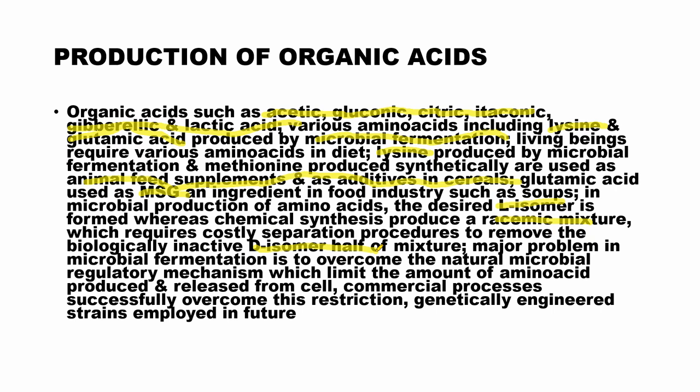In the case of chemical synthesis, we have to separate the biologically inactive D-isomer from the biologically active L-isomer, which is a tedious, time-consuming process causing additional economic loss. To avoid all these hurdles, we can directly go for microbial fermentation of amino acids, which provides amino acids in the biologically active L-isomer form. You may refer to biochemistry for dextro and levo rotation details.